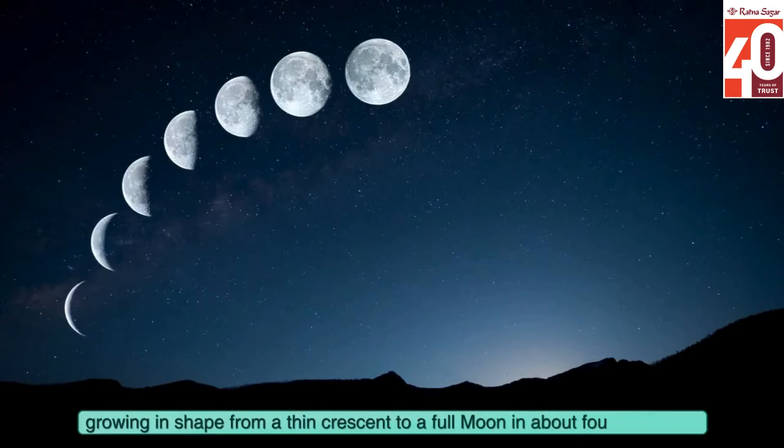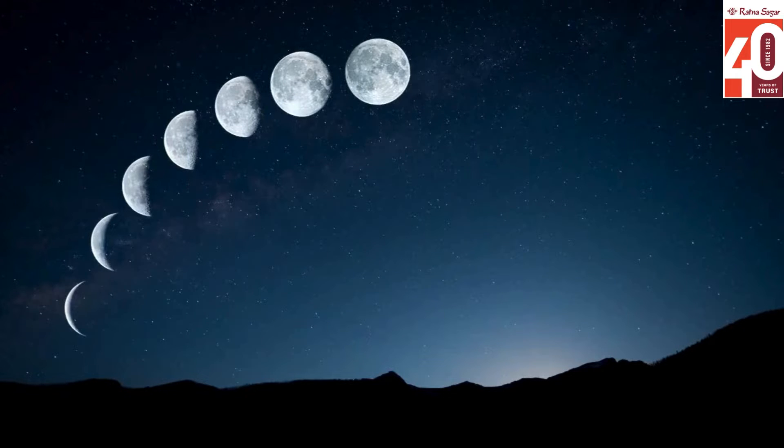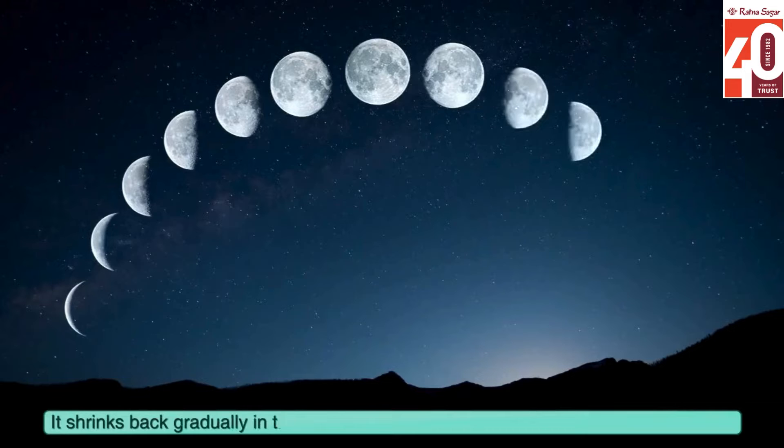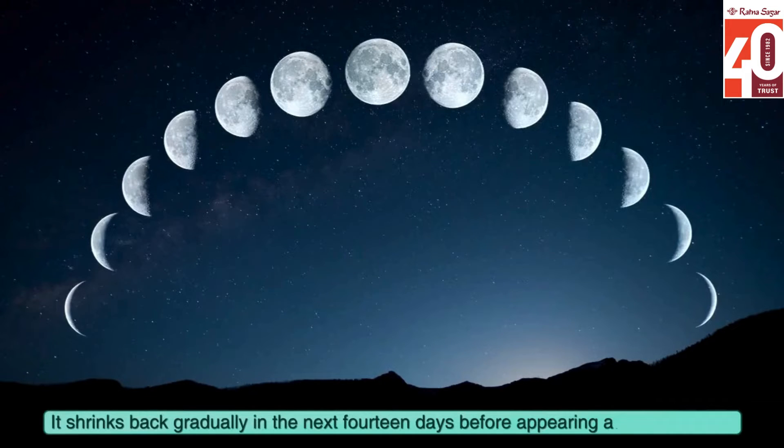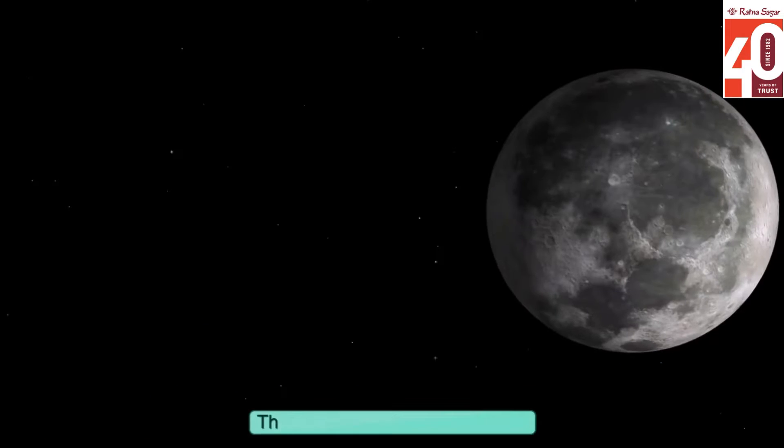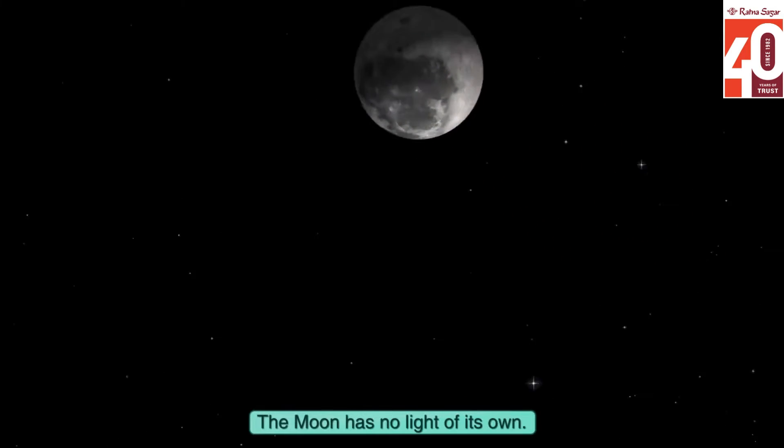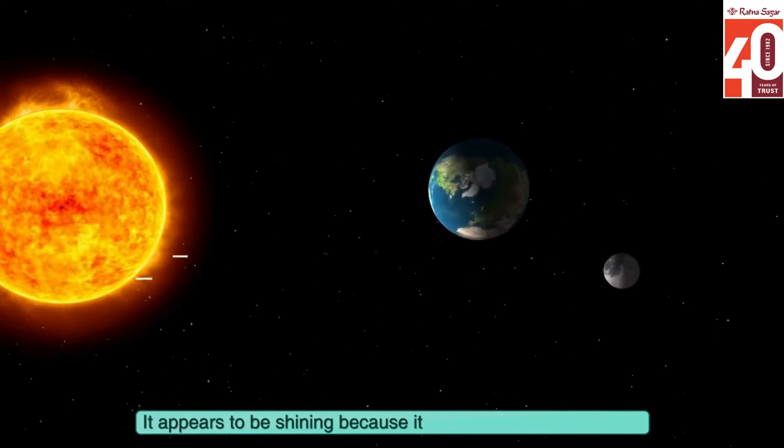It shrinks back gradually in the next 14 days before appearing as a new moon. The moon has no light of its own. It appears to be shining because it reflects light from the sun.